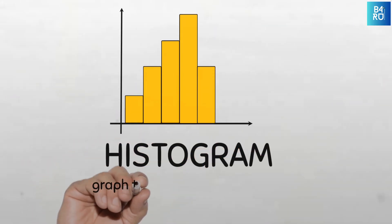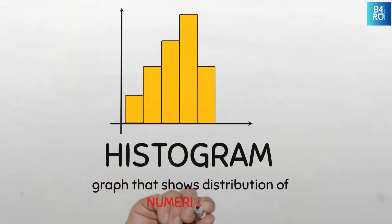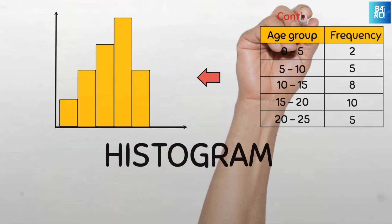A histogram is a type of graph that shows how numerical data is distributed. It is the graphical representation of group data with continuous classes.